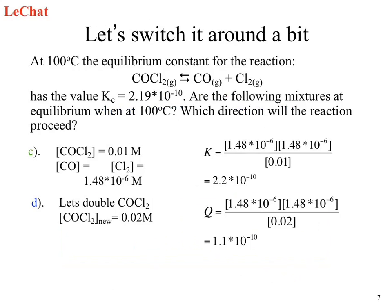We plug in our numbers and our Q value changes. Are we at equilibrium now? No. So now we're evaluating Q, not K anymore. Which way does our reaction shift? Q is now a smaller number — Q is smaller than K. What happens?